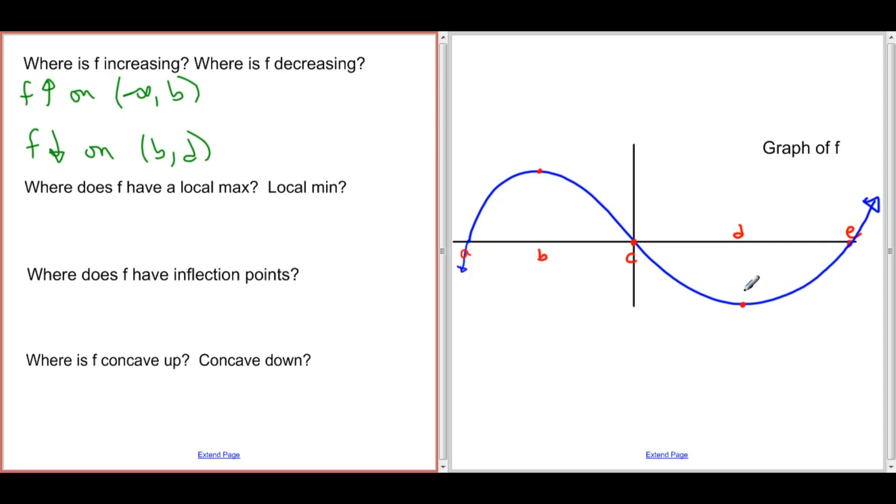And then f increases again from d up until positive infinity, and x goes off to positive infinity. So f is increasing union from d to infinity. So increasing, decreasing, increasing again.